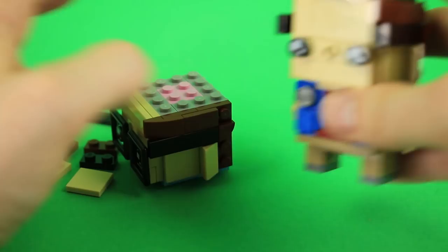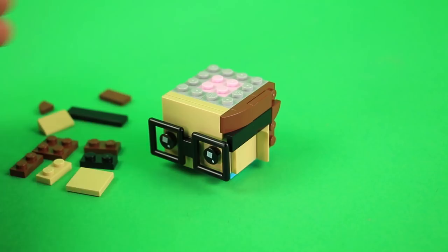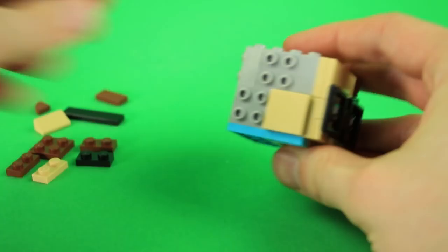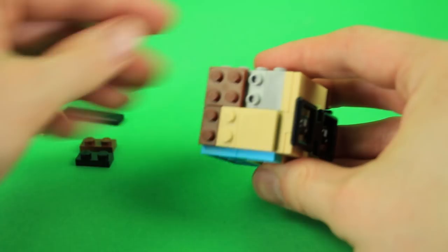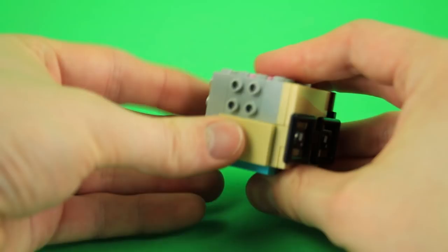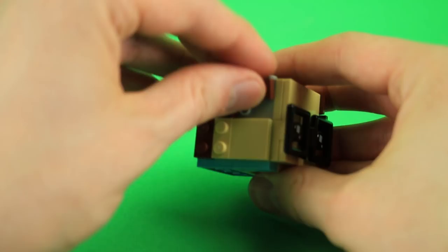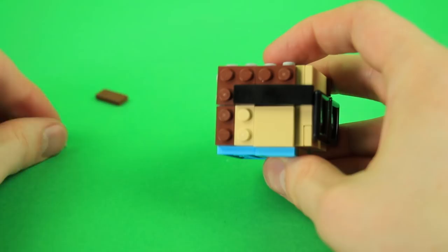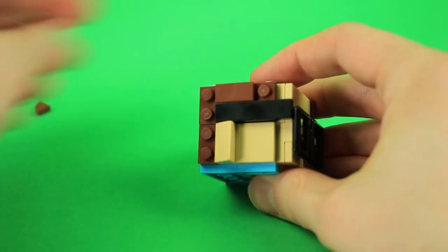On the other side, 2x2 tile, 1x2 plate, 1x2 in brown, 2x2 in brown, 1x2 brown, 1x2 black, 1x4 tile in black, double cheese slope for the ear, 1x2 tile, and a quarter tile. And this one does not have a curvy slope on that side, so it is asymmetrical.